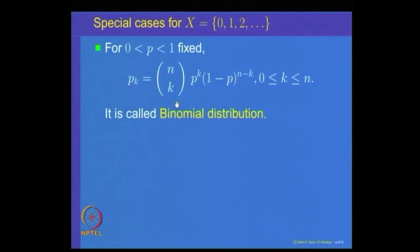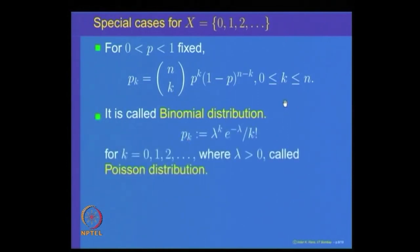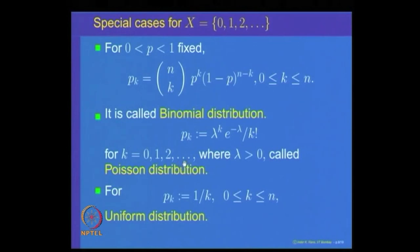A special case is the binomial distribution, where X = {0, 1, 2, ..., n} and pₖ = C(n,k) · pᵏ · (1−p)^(n−k) for k = 0 to n, with 0 < p < 1. One checks that the summation of pₖ equals (p + (1−p))ⁿ = 1. Another special case is the Poisson distribution, where pₖ = λᵏ · e^(−λ) / k!. When the finite set {0, 1, ..., n} is given equal mass 1/(n+1) at each point, this is called the uniform distribution.